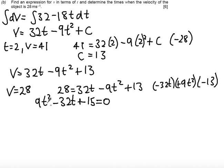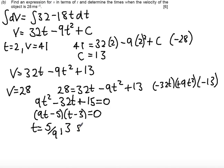Okay, this expression can be factorized to give us 9t minus 5 multiplied by t minus 3 equal to 0. So the times when the velocity is equal to 28 meters a second is 5 divided by 9 and 3 seconds. And it's best to give these as exact answers.